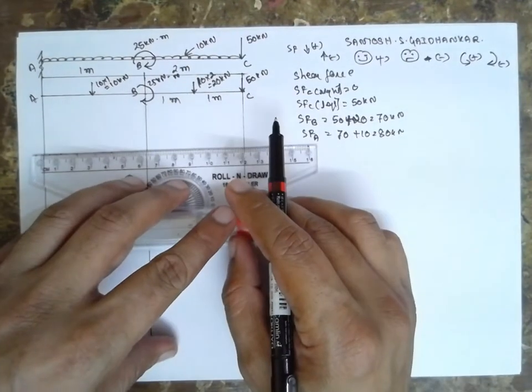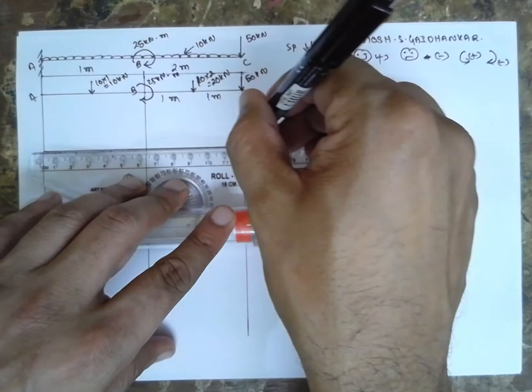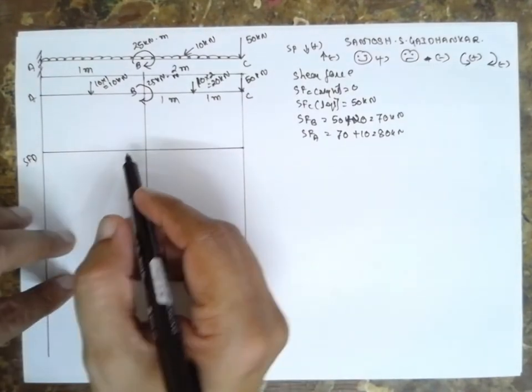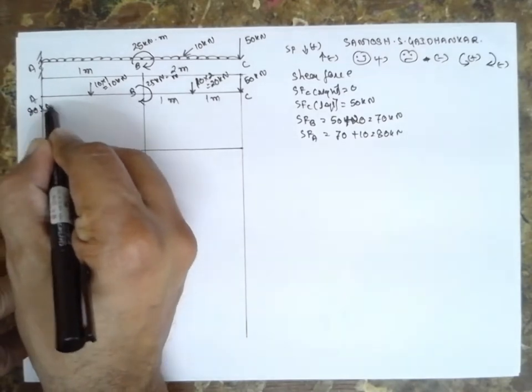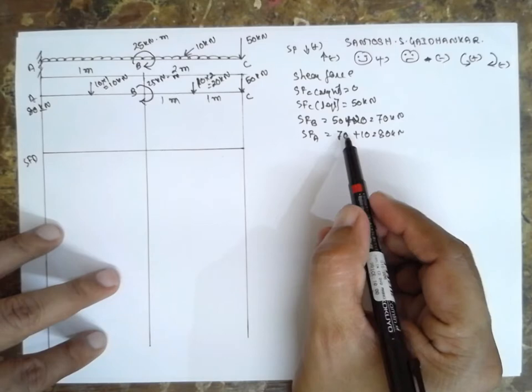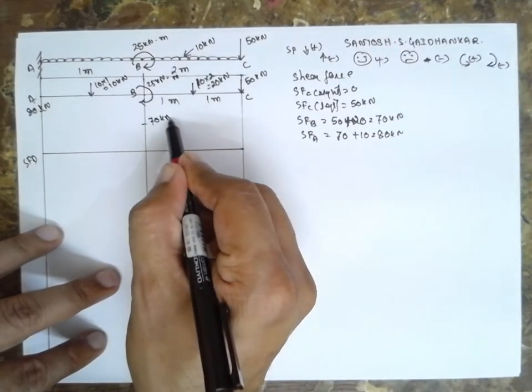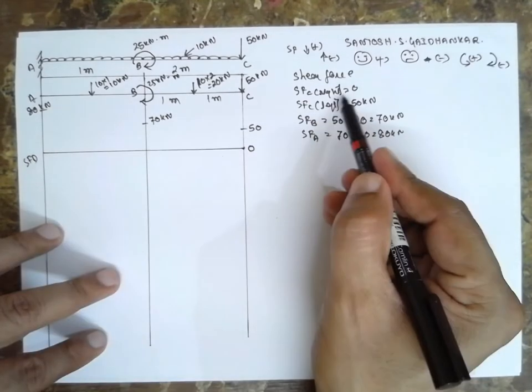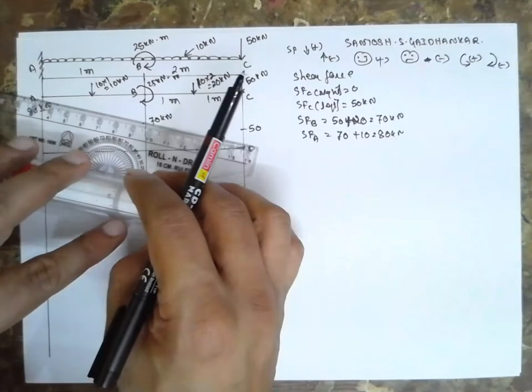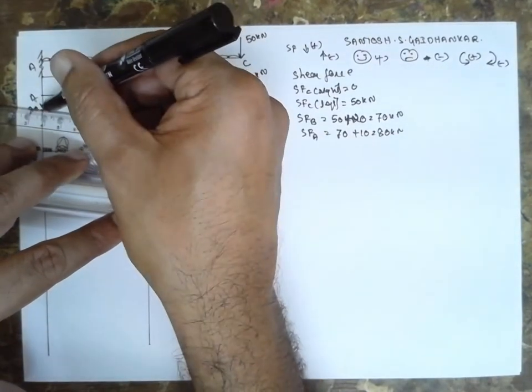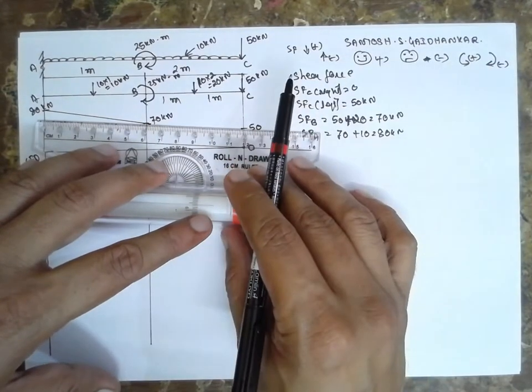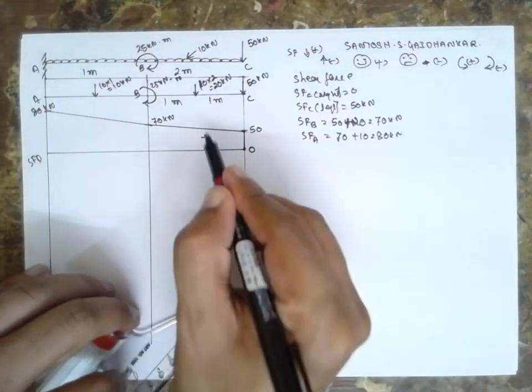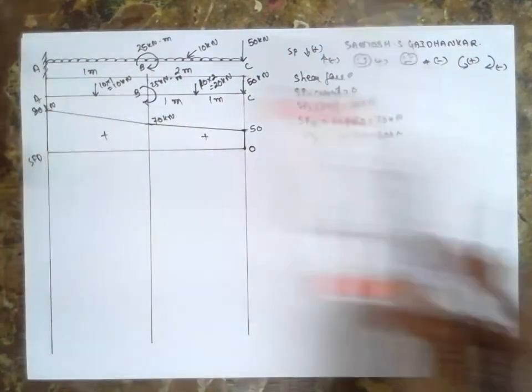First I will draw the shear force diagram. SFD, above is positive and below will be negative. The first value is 80 kN. At B, 70 kN. At C, 50 kN. And C right is 0. Now because of UDL, the inclined line comes in picture. The two values, inclined line, again inclined line. 0, positive, positive, positive.